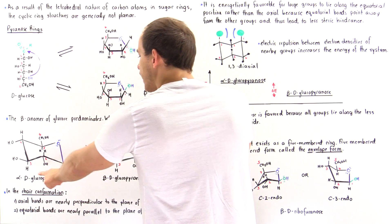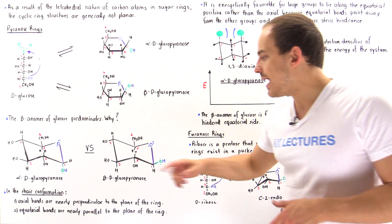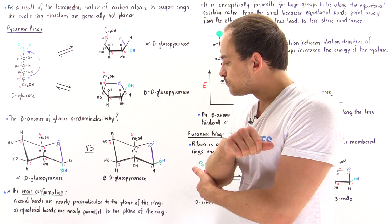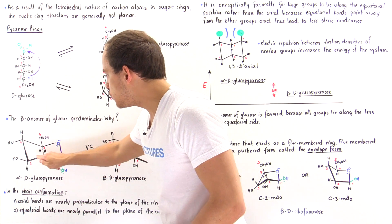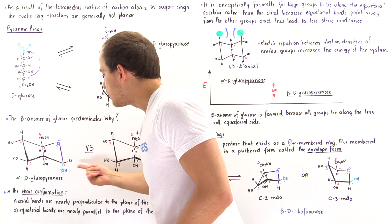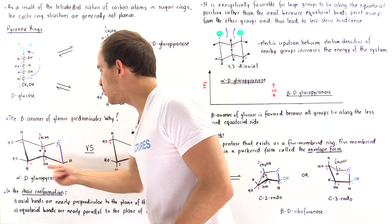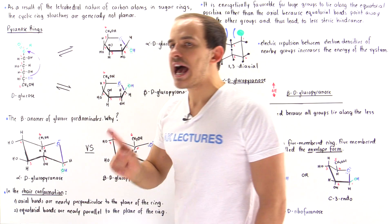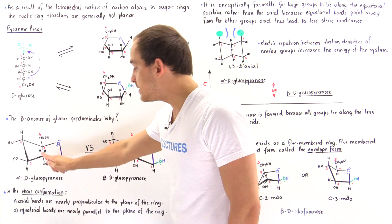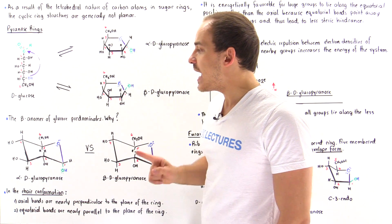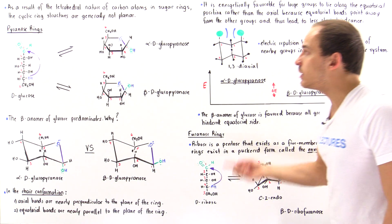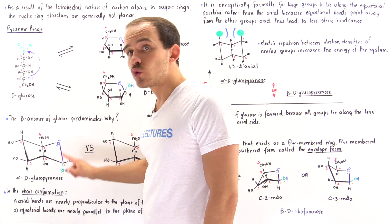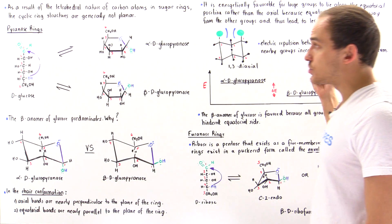With that in mind, let's compare alpha-D-glucopyranose and beta-D-glucopyranose in their chair conformations. In alpha-D-glucose, five of these carbon atoms contain large groups that point along the more stable equatorial position. But on carbon number one, this hydroxyl group points along the axial position, which is — as we said — higher in energy.